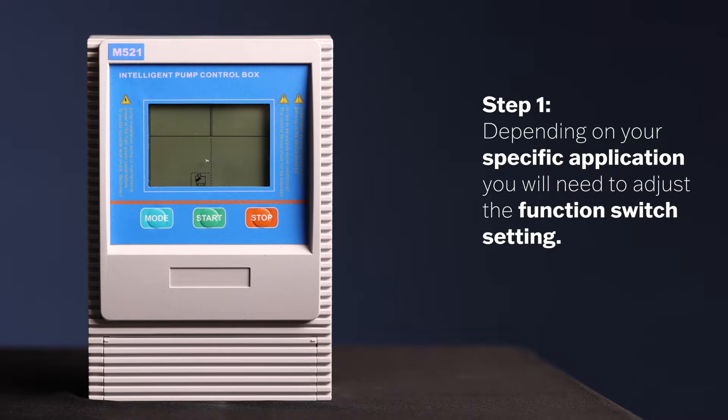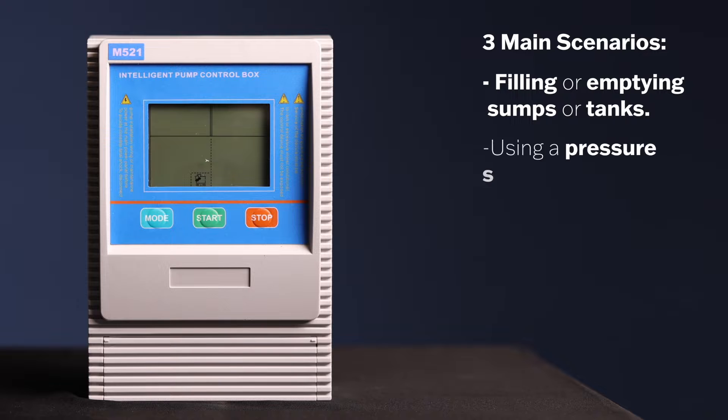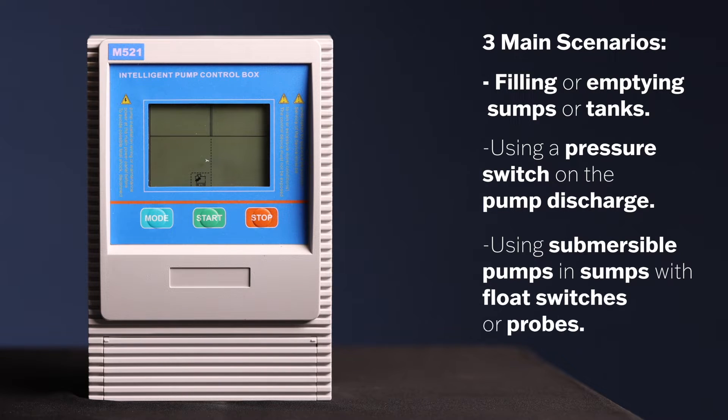Step 1: Depending on your specific application, you will need to adjust the function switch setting. There are three main scenarios we'll cover: filling or emptying sumps or tanks, using a pressure switch on the pump discharge, and using submersible pumps in sumps with float switches or probes.